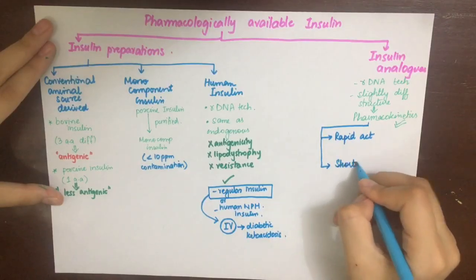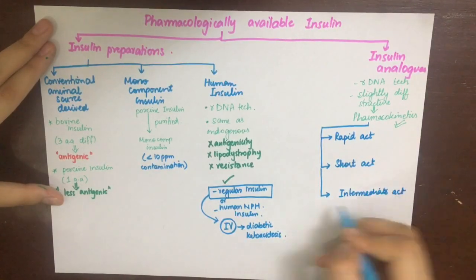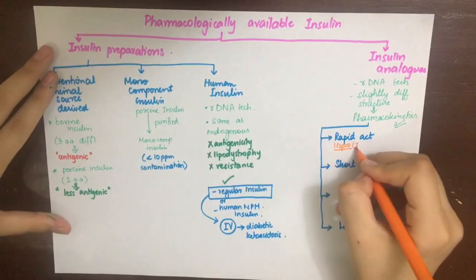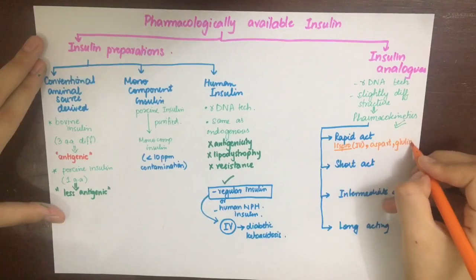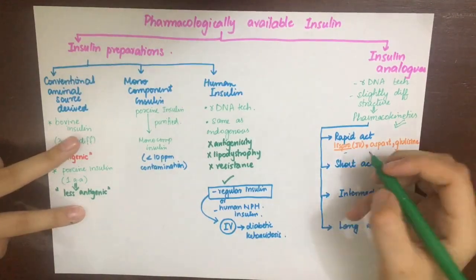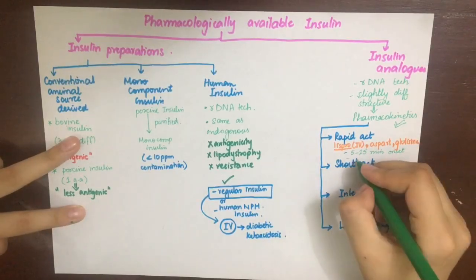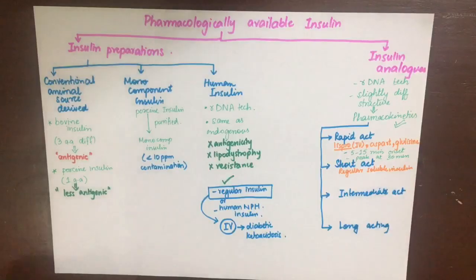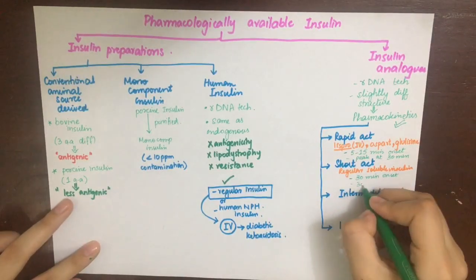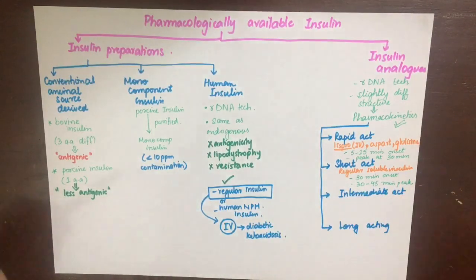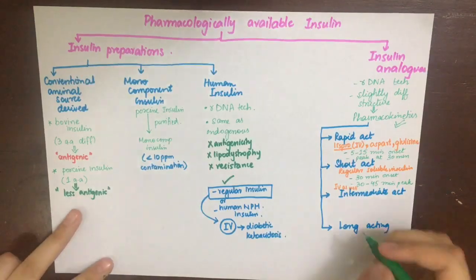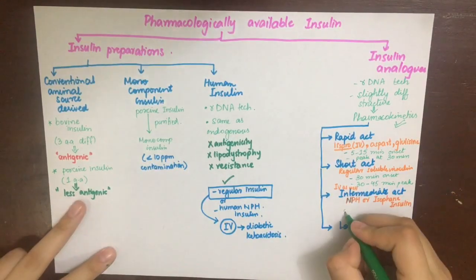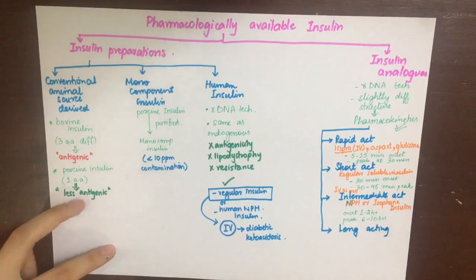Insulin analogues are divided into rapid acting, short acting, intermediate acting, and long acting. The rapid acting insulins are Lispro, Aspart, and Glulisine. They can be given IV in emergencies and are given just before meals due to a very rapid onset of 5–15 minutes with peak at 30 minutes. Short acting insulin is regular soluble insulin with onset in about 30 minutes and peak at 2–4 hours, so it should be given 30–45 minutes before a meal and can be given IV in emergencies. Intermediate acting insulins are neutral protamine Hagedorn (NPH) or isophane insulin, with onset of 1–2 hours and peak at 6–10 hours, given subcutaneously.